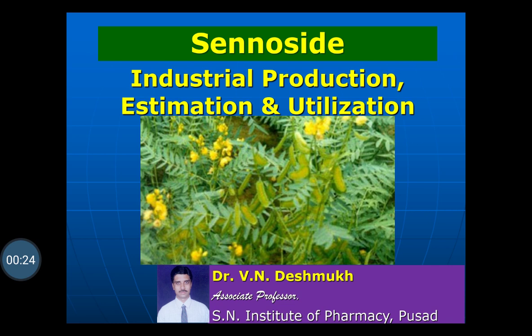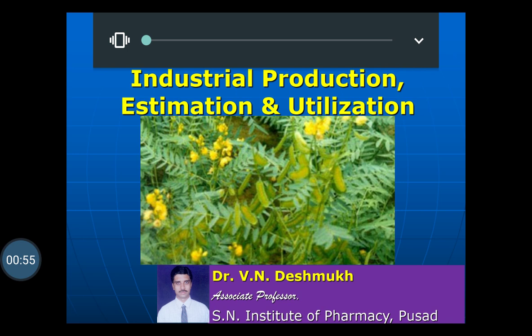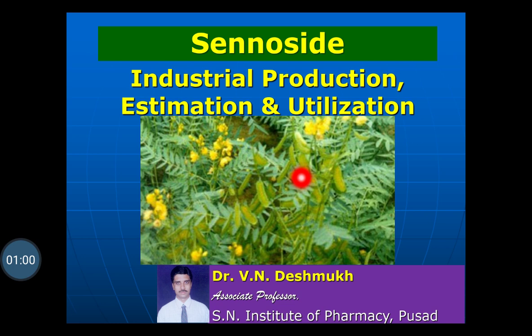From these two varieties, Senna is obtained and this Senna contains the active chemical constituents, that is the anthraquinone glycosides. They are Sennoside A, Sennoside B, Sennoside C and Sennoside D, which are the active chemical constituents present in the Senna. In the picture, you can see the Senna plant along with the pods. Two types of varieties of Senna are there — Alexandrian Senna and Indian Senna — belonging to family Leguminosae.